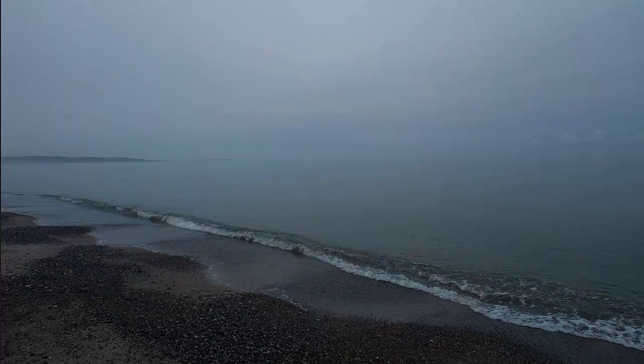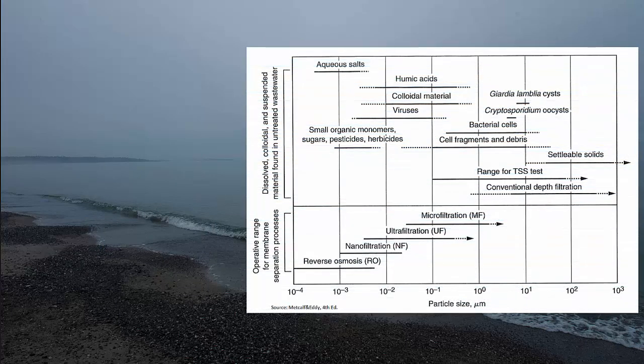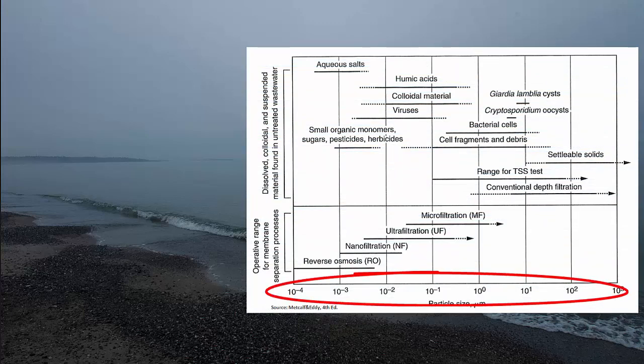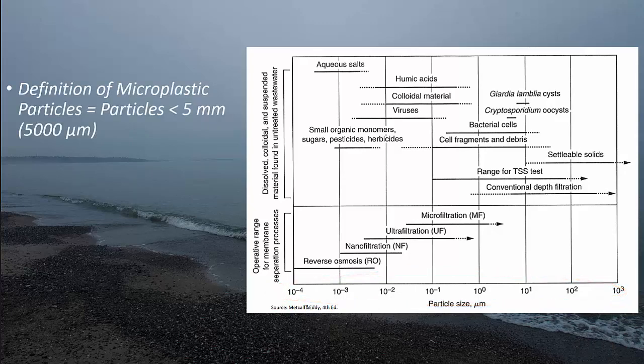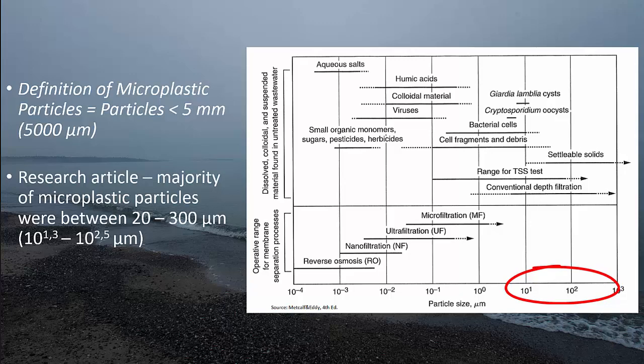First of all, we need to define what is a microplastic particle. We will use this graph where on the x-axis we have the particle size in micrometers. From the research article, the definition of a microplastic particle is a particle with a diameter of less than 5 millimeters, or 5,000 micrometers. In the research article, they looked at very small particles between 20 to 300 micrometers.